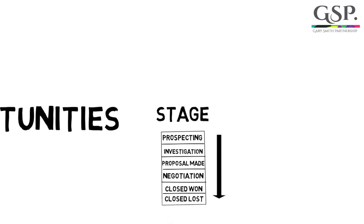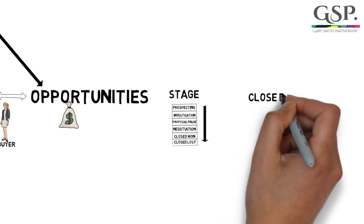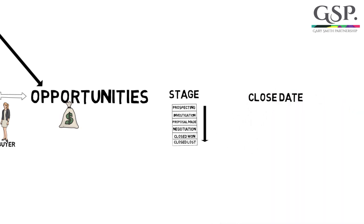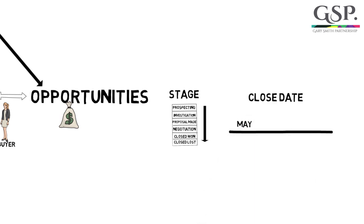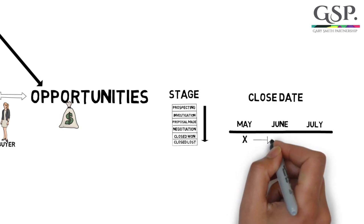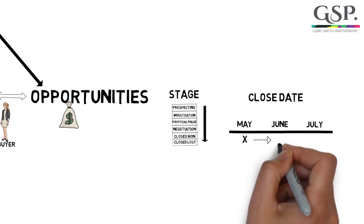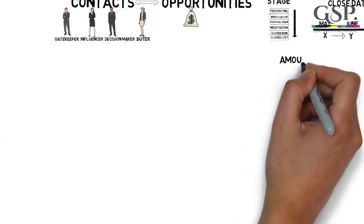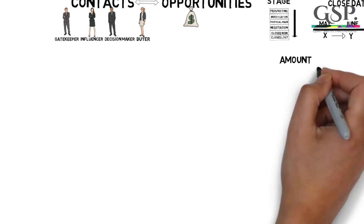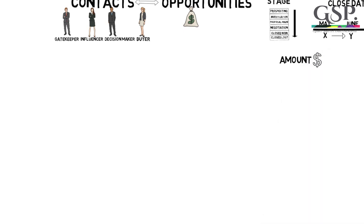The second essential piece of information is the close date. This is the date by which you believe the deal will be closed — it will be won or lost. And this date may change as the sales process plays out.